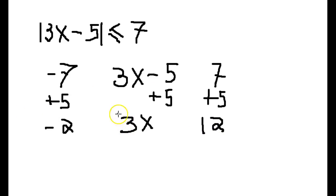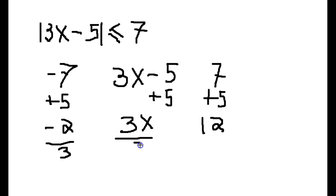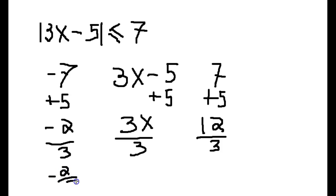Our next step is to get rid of the 3, so we divide all three parts by 3 — on the far left, in the middle, and on the far right. On the far left our result is negative 2 thirds, in the middle our result is x, and on the far right our result is 4.